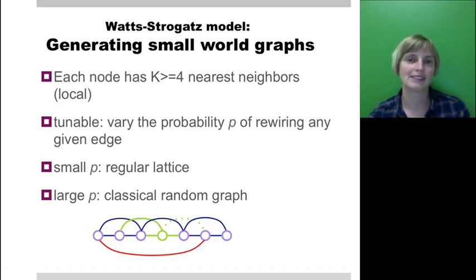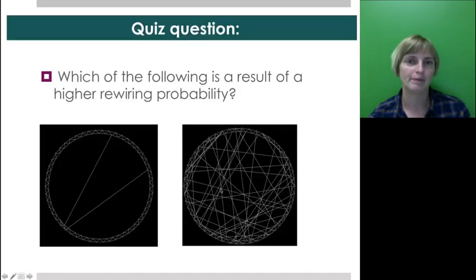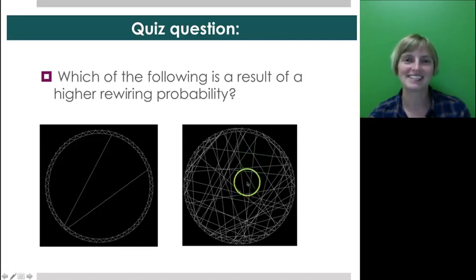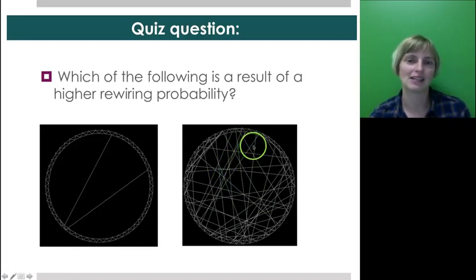So to recap: you have this lattice, each node has four nearest neighbors. We want to distinguish, now that we can tune, what does the network look like when there's a small probability p of linking to a random node as opposed to just your neighbors on the lattice? For small p we know it should look like a regular lattice; for large p we know it should look like a random graph. Hopefully you can see that this one has had more rewiring happening — in this algorithm the edges were just added on top.